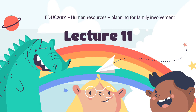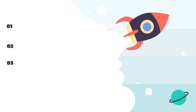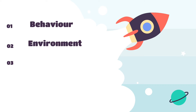Hi everyone, welcome to lecture 11. What we're going to do for this one is just go through some things about human resources and how we plan for families to be involved. The main things we're looking at today are how you plan for behavior, a little bit about the environment that you must plan for, and then our main focus is planning for the human resources part.